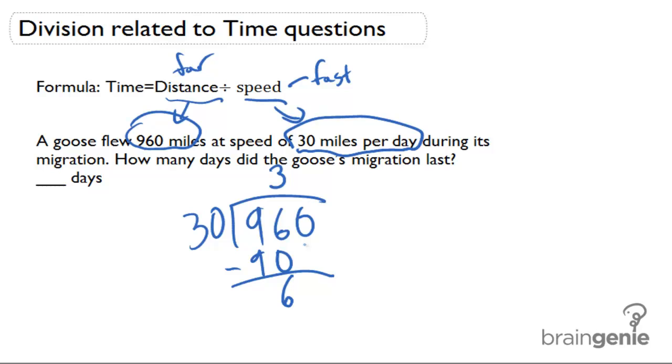And since 30 can't go into 6, we're going to bring down the 0, so we have 60. And how many times can 30 go into 60?